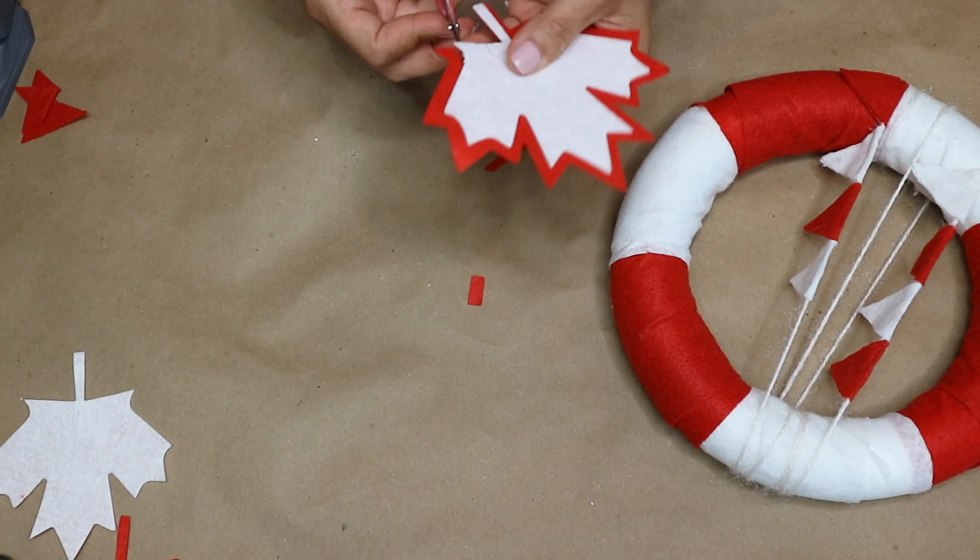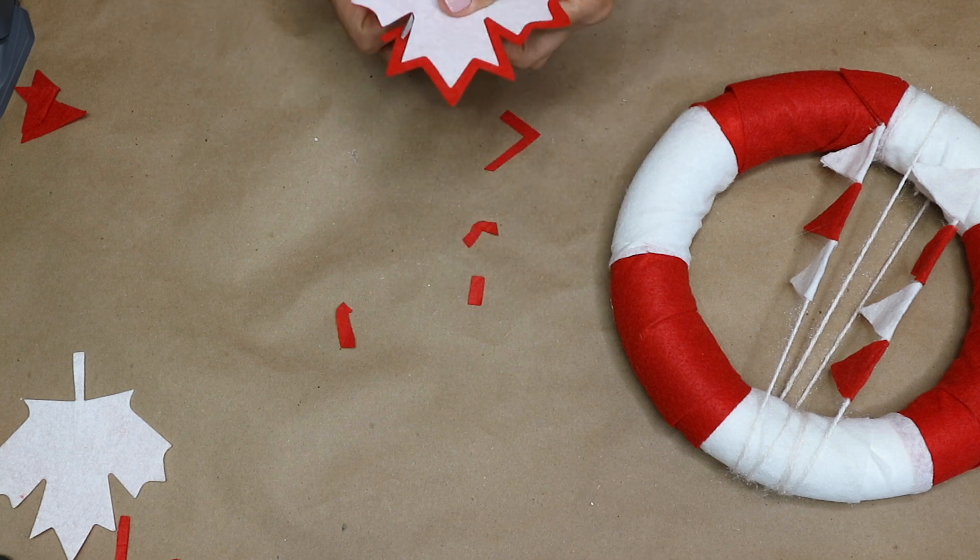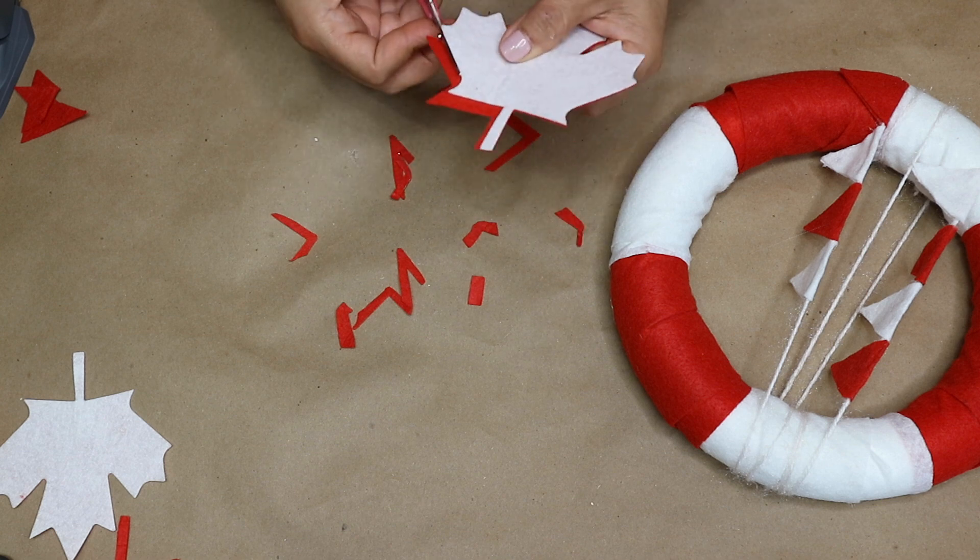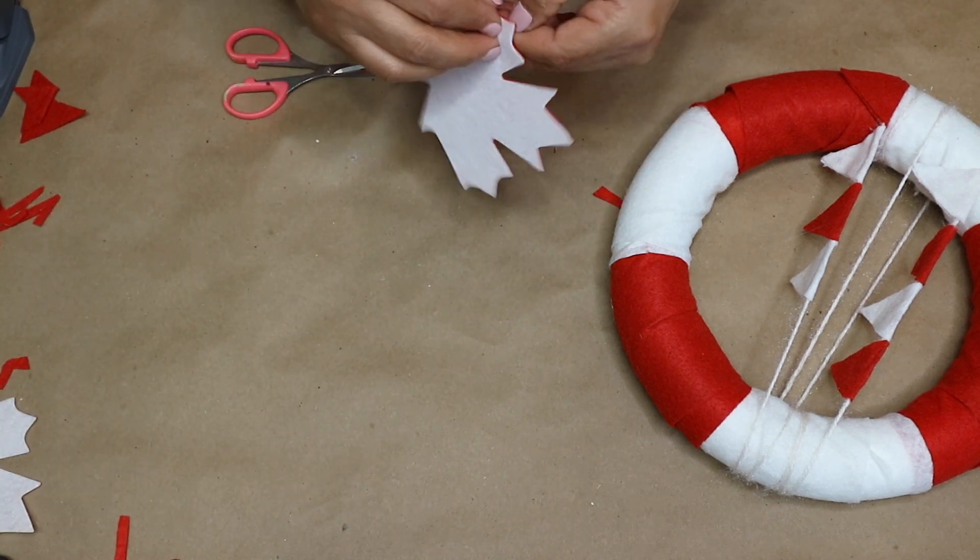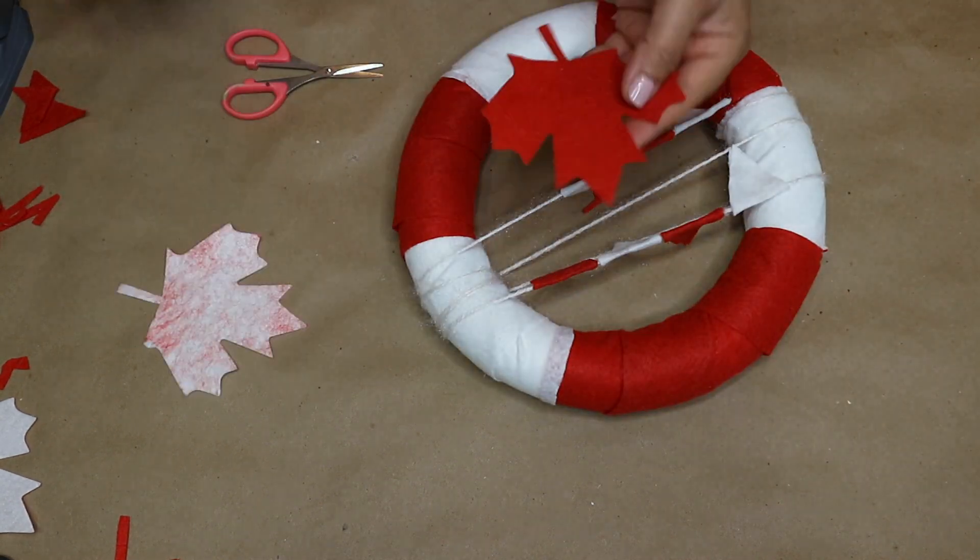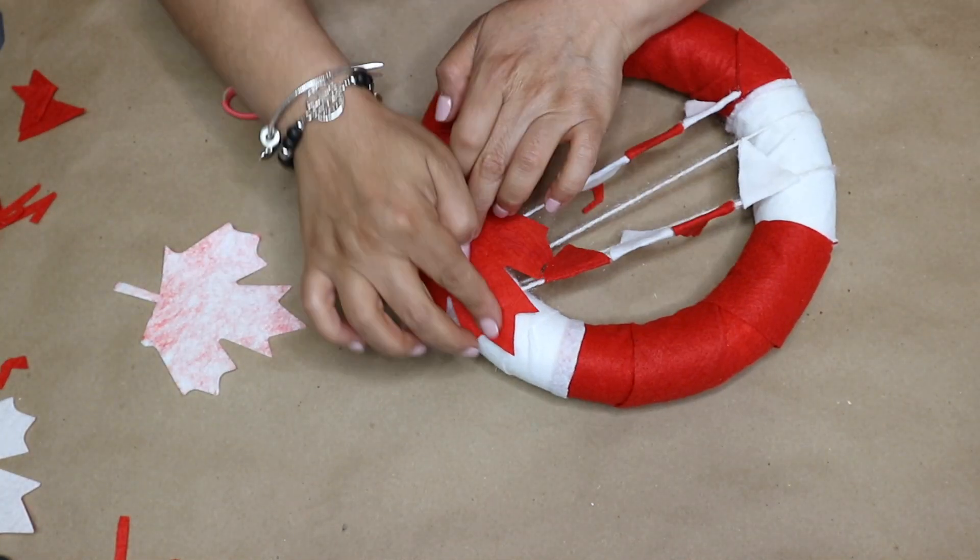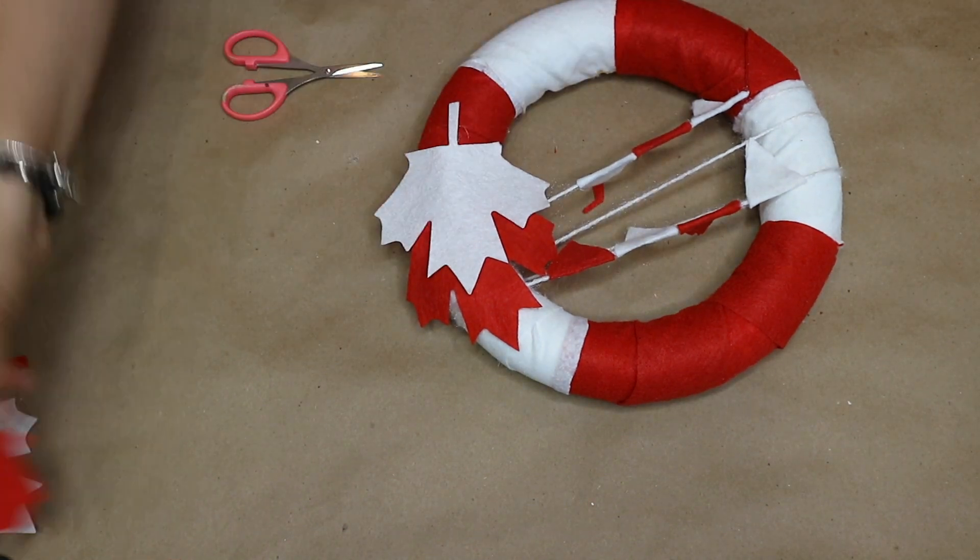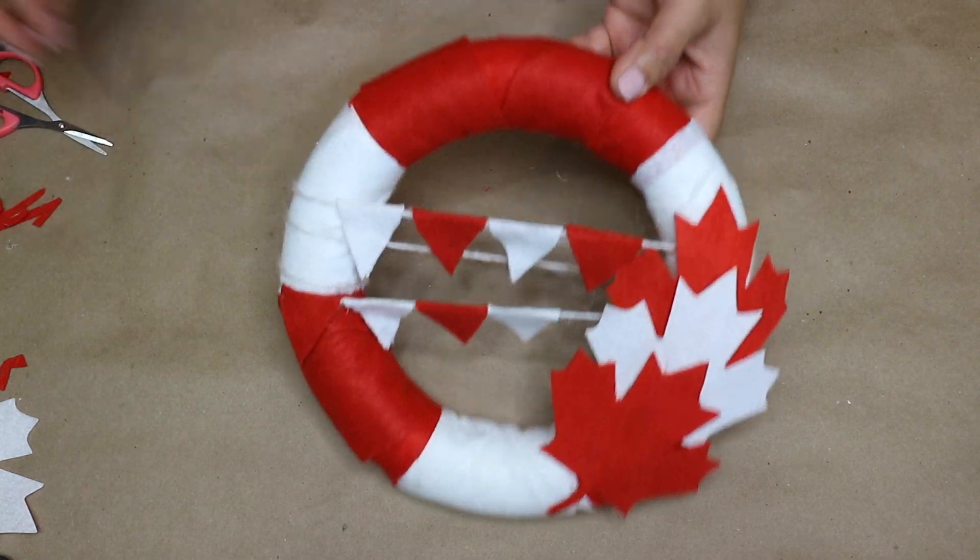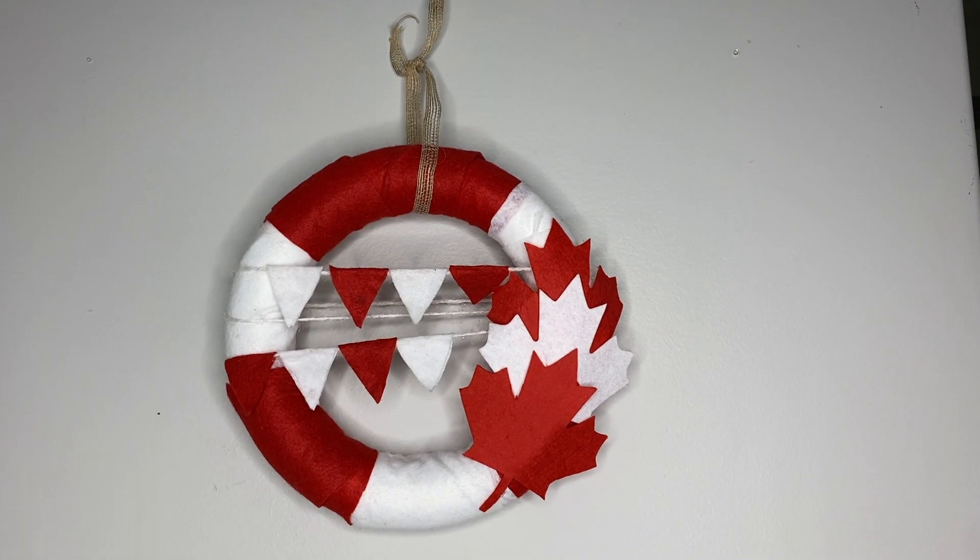And once I get all that together I take these maples and I try to cut them smaller just to the white size. Then I separate them and hot glue them on the wreath. Now here's the finished look, absolutely beautiful.